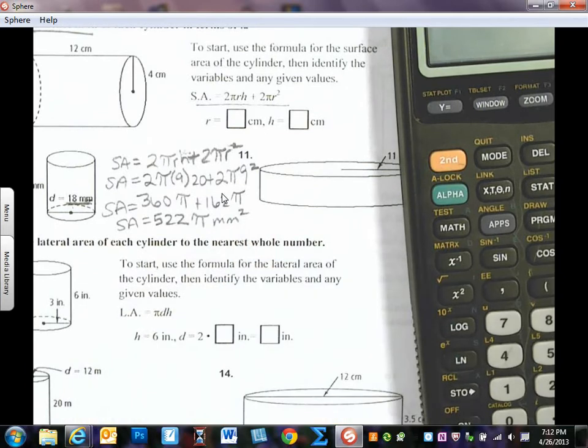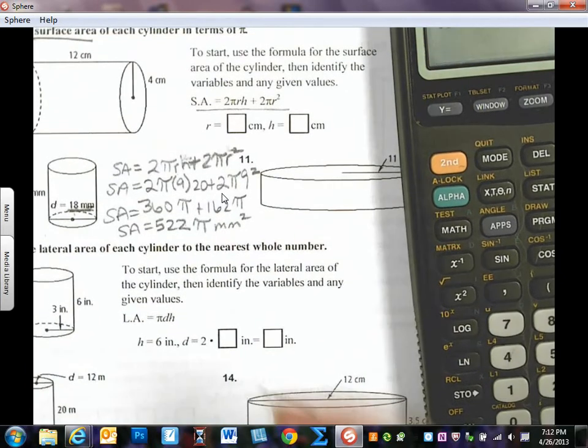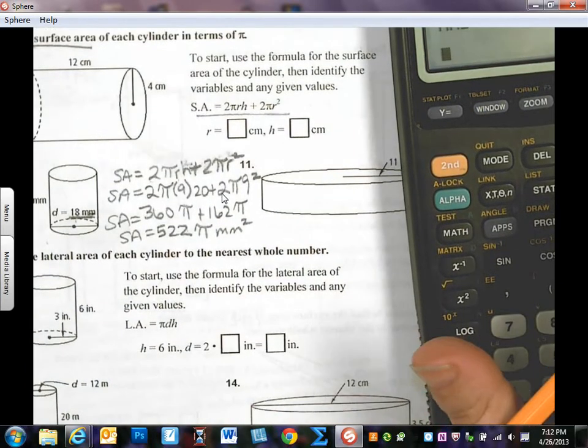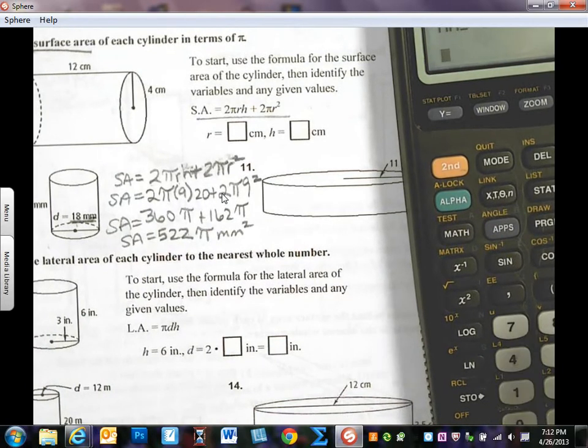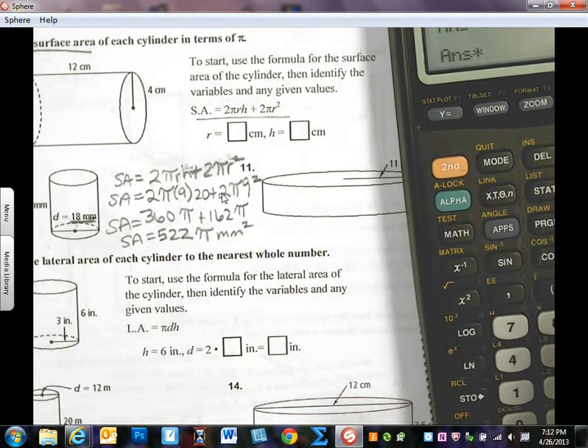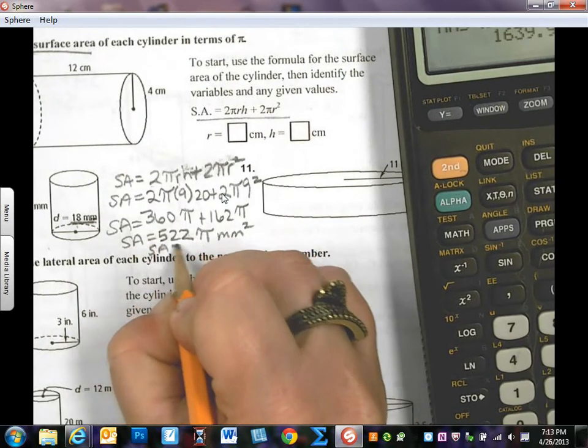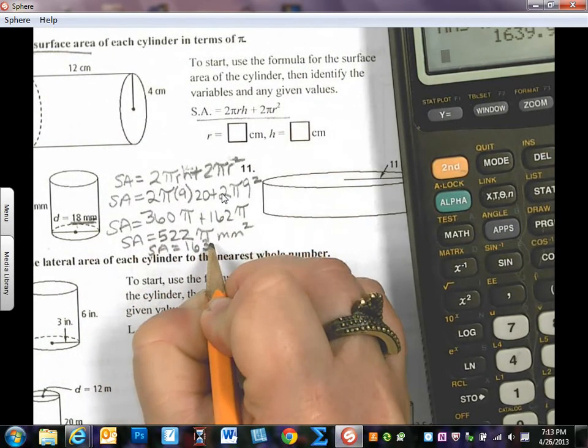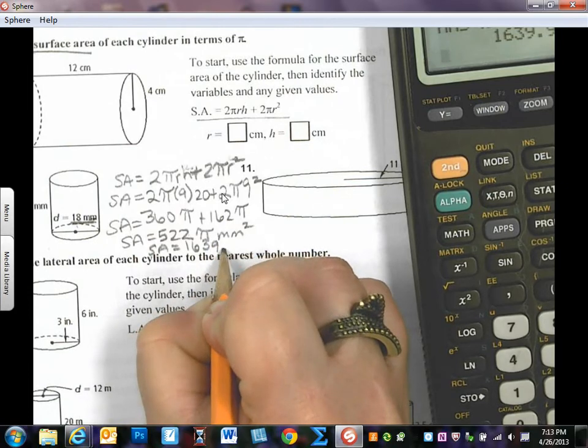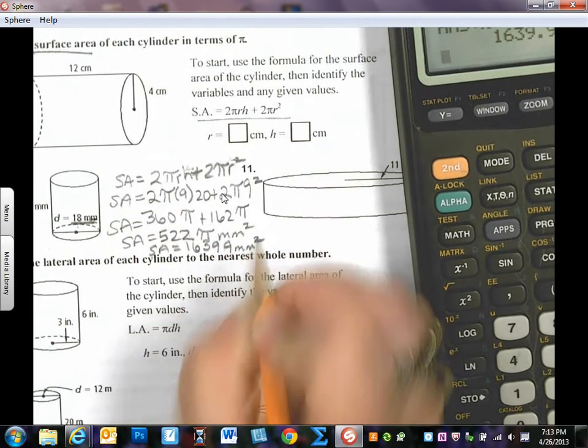2 times 9 times 20 equals that's 360 pi and then we have 81 because that's 9 squared times 2 which is 162 pi. Oh, we're leaving this answer in terms of pi. Okay, that's the difference. I'm looking at the answer key and I'm thinking well that's kind of ugly. So when I add 360 plus 162 I get 522 pi and that works. When you multiply that all the way out we get times pi and we get 1639.9 millimeters squared. So that would be right.